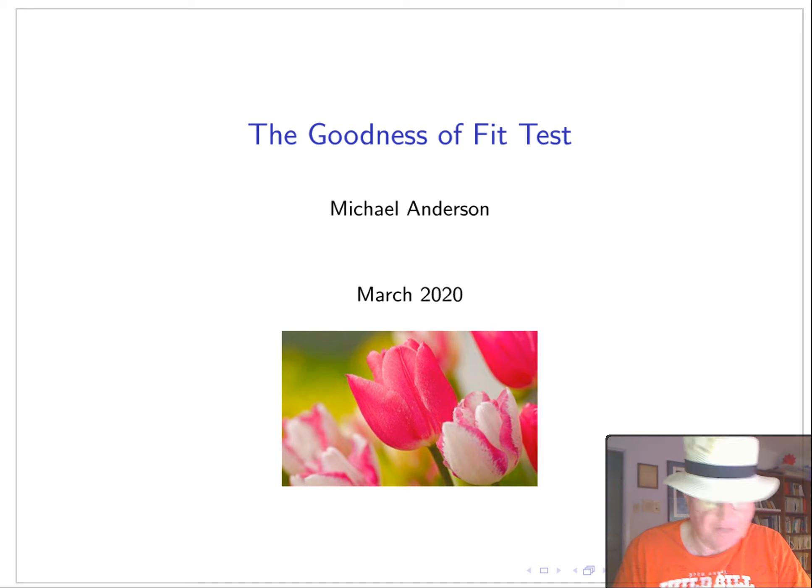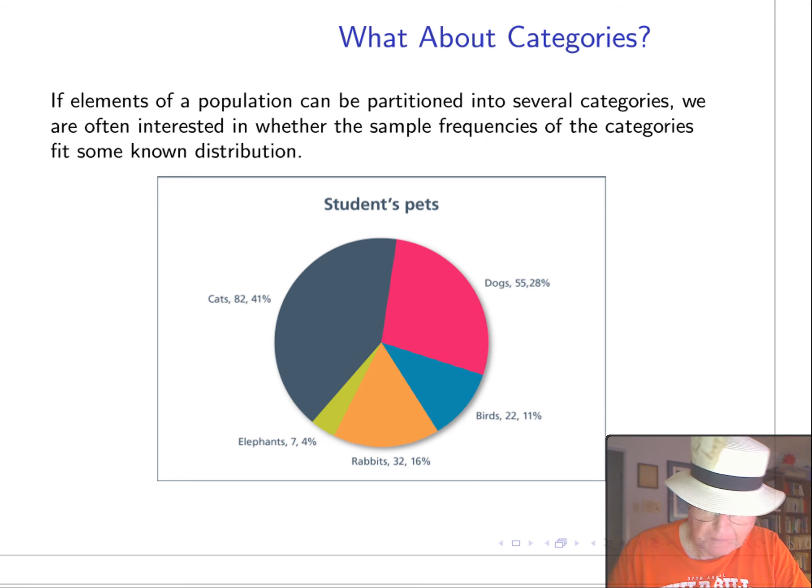This lecture will discuss what's called the chi-square goodness of fit test. This test is appropriate when we have not one proportion but several proportions. Usually these are called categories, and if the elements of a population can be partitioned into several categories, meaning each element only belongs to one category, we're often interested in whether or not the sample frequencies fit some known distribution.